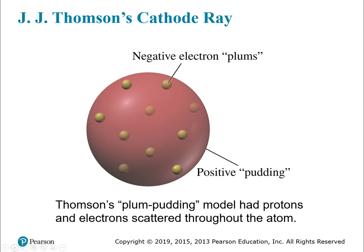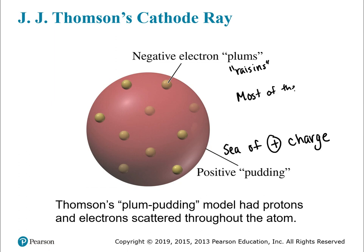Here's a depiction of his model. You've got this positive pudding — a sea of positive charge — and within that sea you've got the plums or raisins that are the negative electrons. So most of the atom is empty space with the positives and negatives just kind of hanging out together.